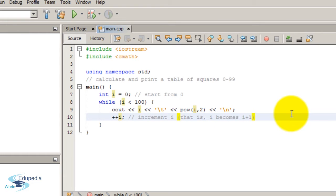This says i to the power of 2. In this program what we are trying to do is calculate and print a table of squares starting from 0 to 99. So this while loop will be looped 100 times.